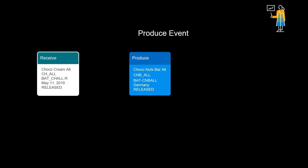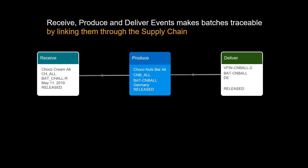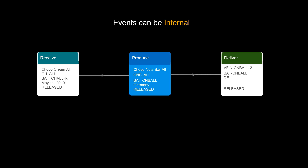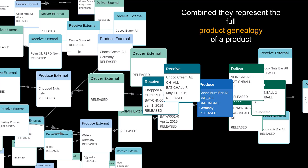For example, a receive event contains the information of a purchase order. Produce events contain all production steps at different locations. Deliver events represent, for instance, delivery to a customer. Receive, produce, and deliver events make batches traceable by linking them through the supply chain. Events can be internal, meaning originating from your own ERP system, or they can be external, originating from one of your business partner's systems. Combined, they represent the full product genealogy of a product.